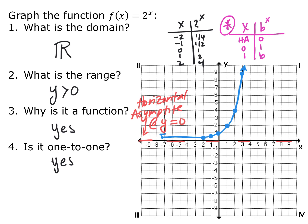We now have a new parent function: the exponential function. It changes depending on the base, but these are the parent points to use. The horizontal asymptote starts at y equals 0. At x equals 0, whatever the base is, you always get 1. And at x equals 1, you always get out whatever the base is. This is the new parent function for exponential functions.